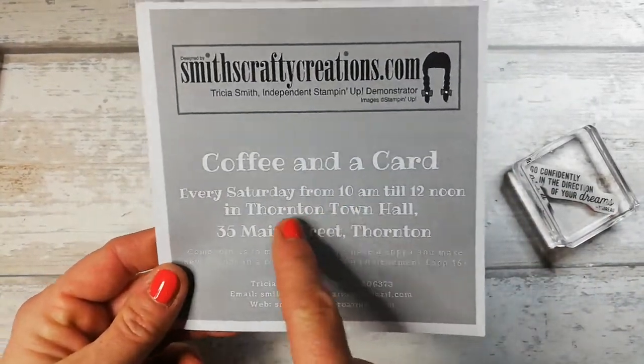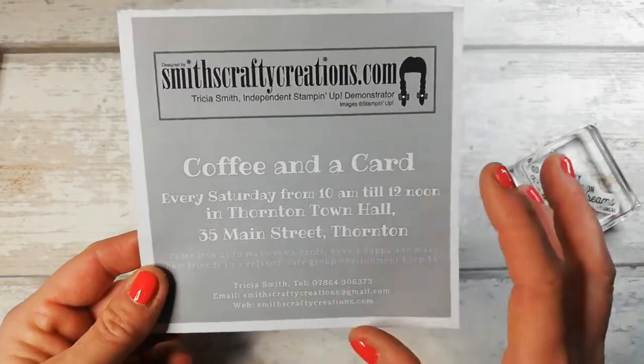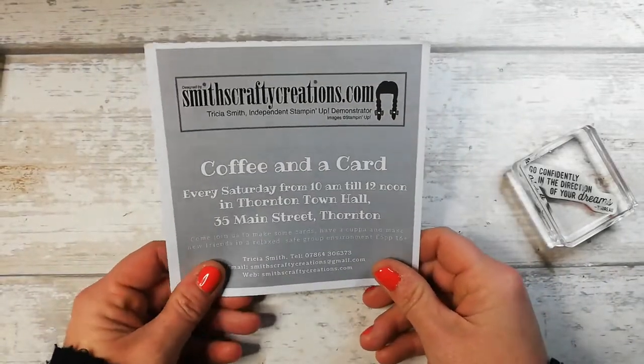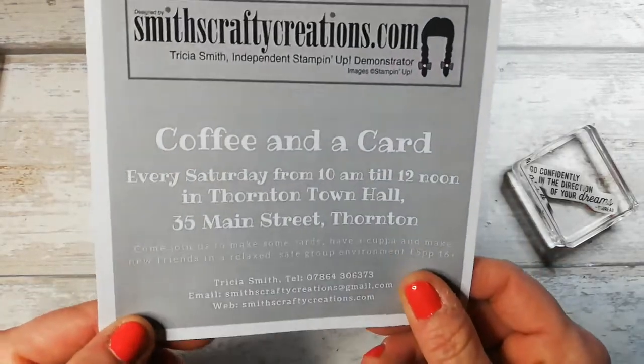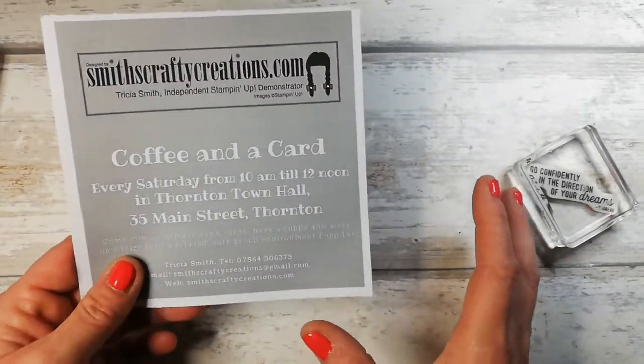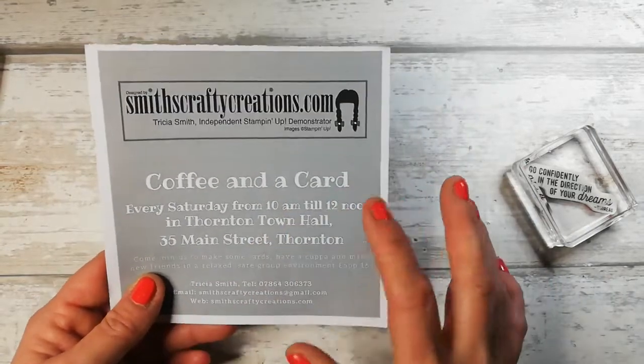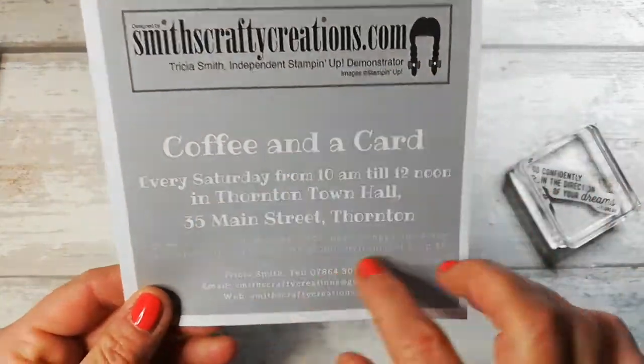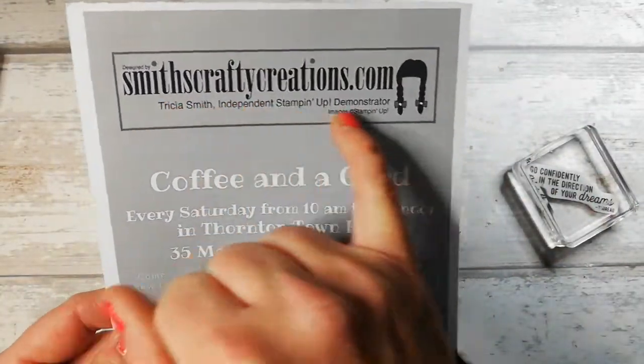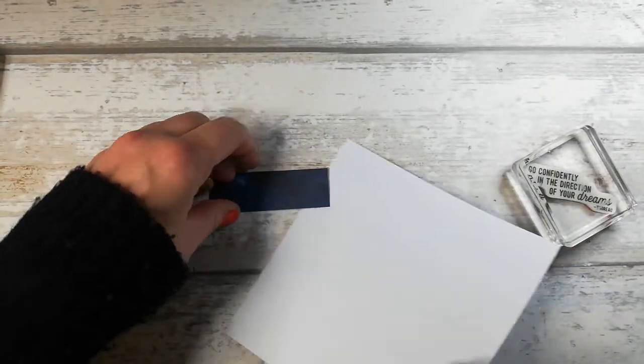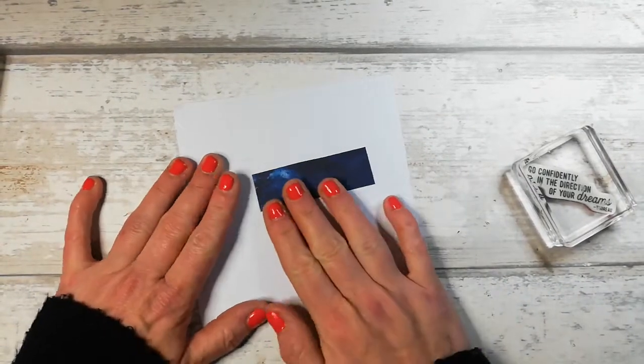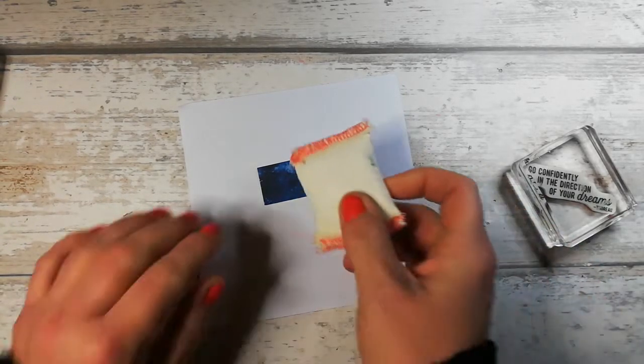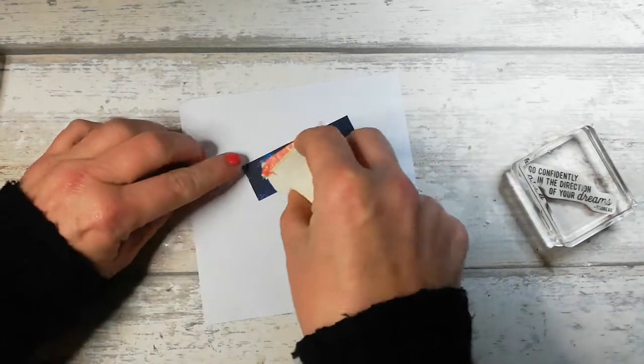For anyone that's local to me, I do run a coffee and card. It's not in a coffee shop. It's in my local Thornton Town Hall in the room that I use for my crafting. And it's basically a couple of cards. A couple of simple cards or one kind of fancier card. It's only £5. Tea, coffee and biscuits. It's more information under the events page on my website at smithscraftedcreations.com. Everyone welcome. I had a little message from someone today wanting to come along with her sister next week. So that's absolutely amazing. So it shows that, you know, we are connecting with people out there. So that is absolutely brilliant.